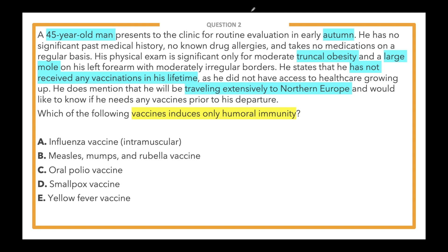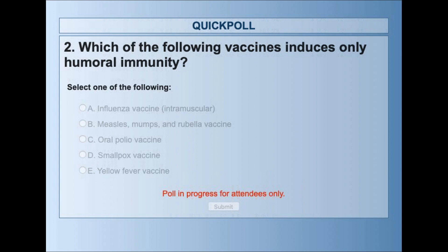Answer choices, starting from the bottom: E) yellow fever vaccine, D) smallpox vaccine, C) oral polio vaccine, B) measles-mumps-rubella (MMR) vaccine, and A) influenza vaccine intramuscular. Select the vaccine you think induces only humoral immunity.